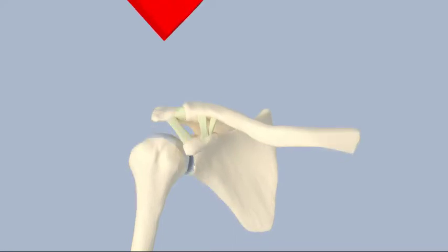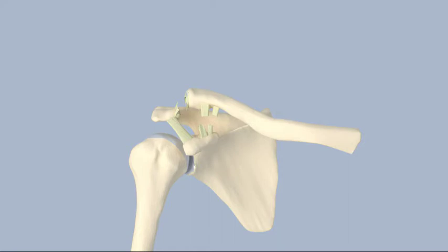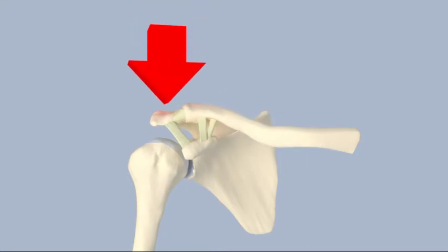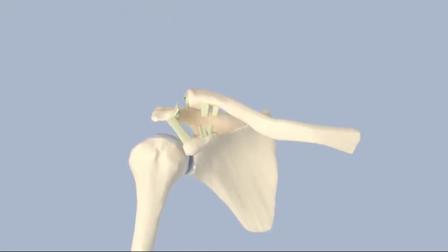Type 3 AC injuries occur when the acromioclavicular ligament and coracoclavicular ligaments are completely torn. This results in more instability. The clavicle is 100% displaced from the acromion. Treatment is usually non-operative, but surgery may be considered for athletes, heavy lifters, and those who would prefer a scar over the AC joint as opposed to a deformity.